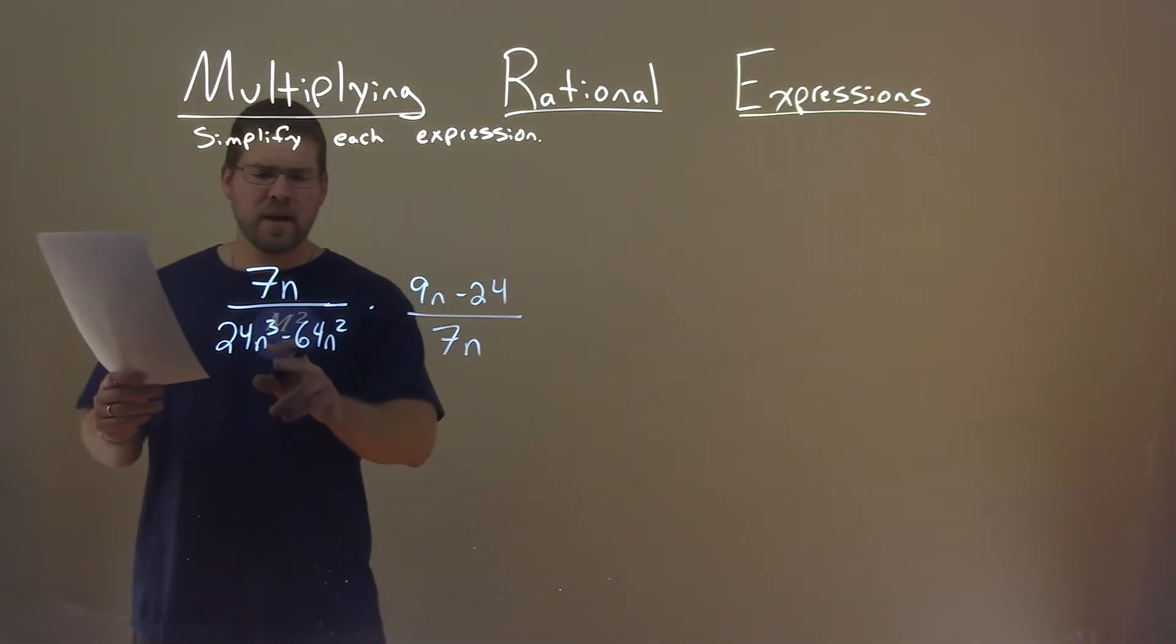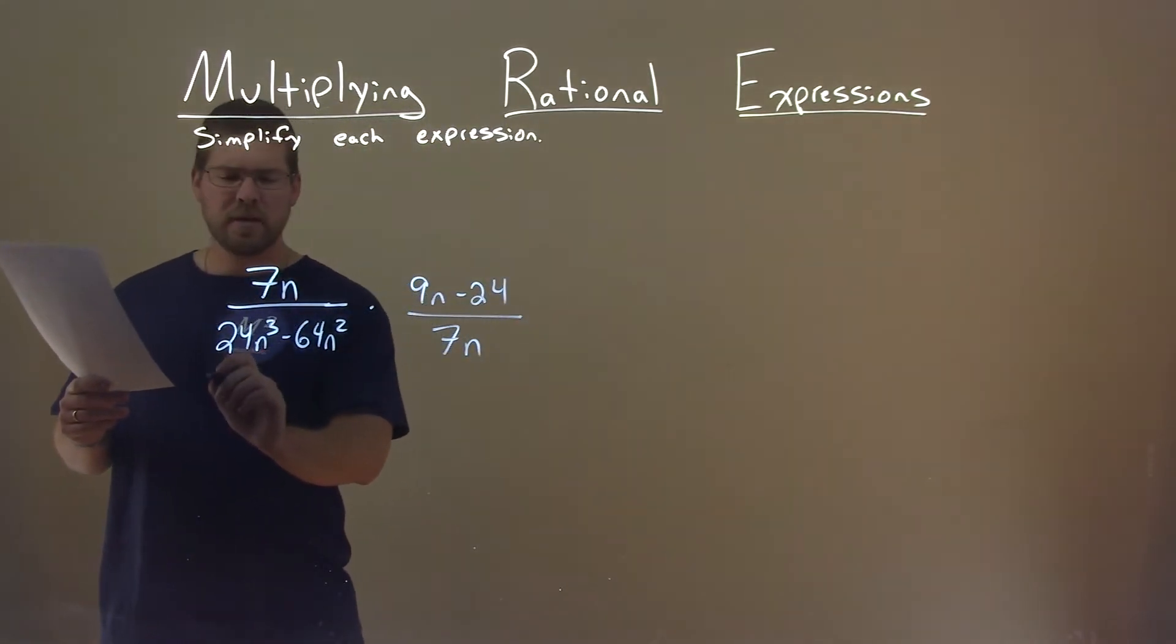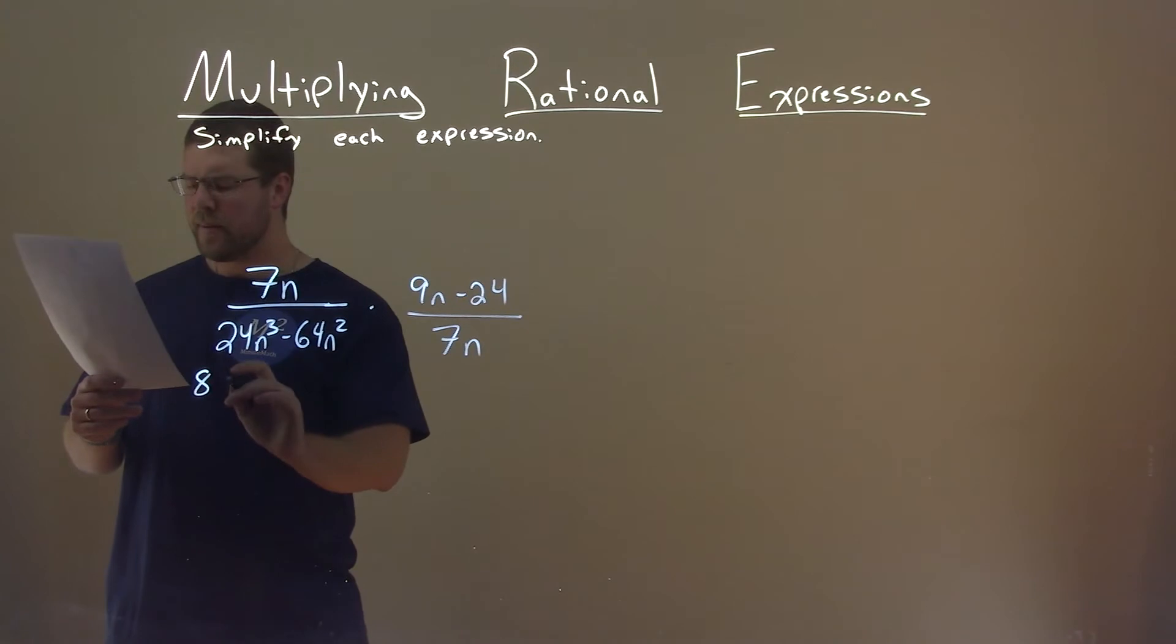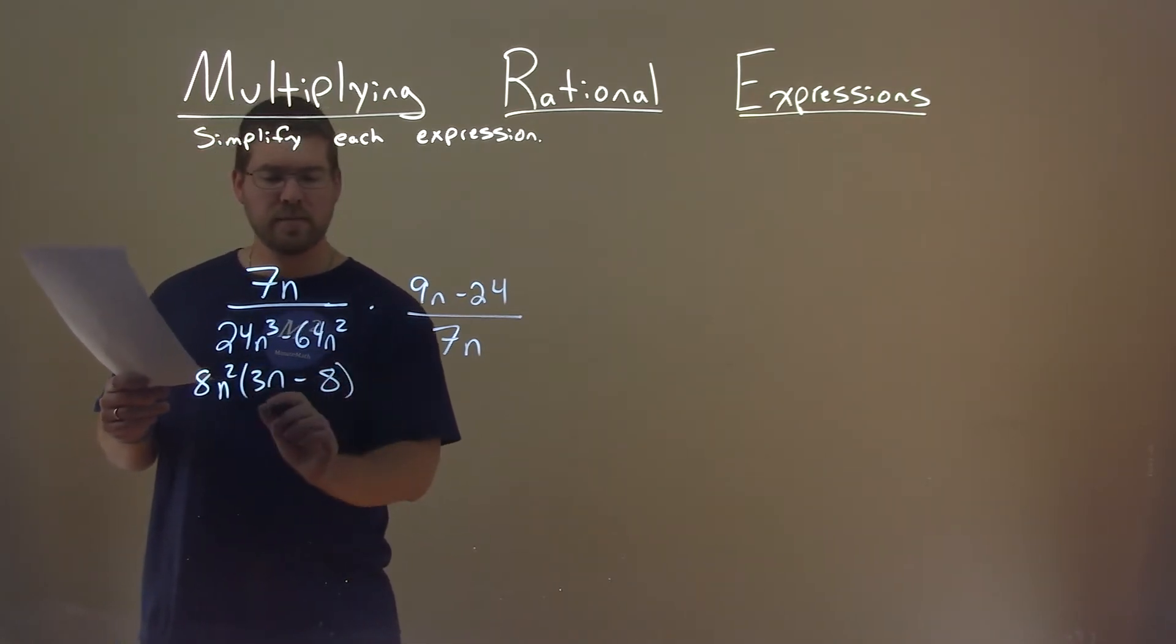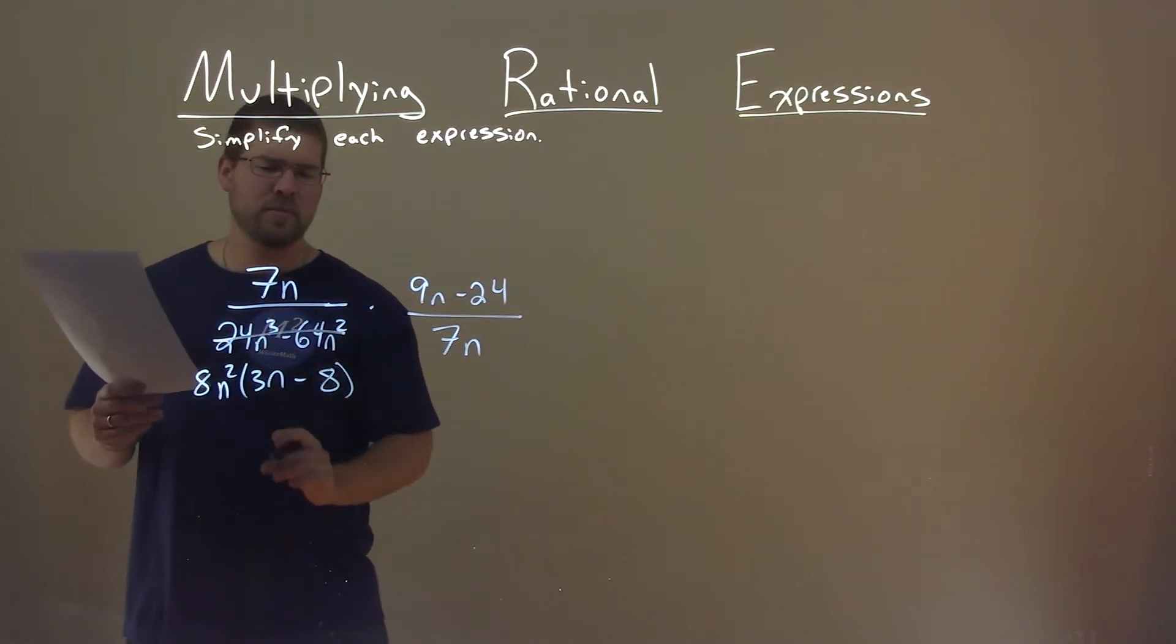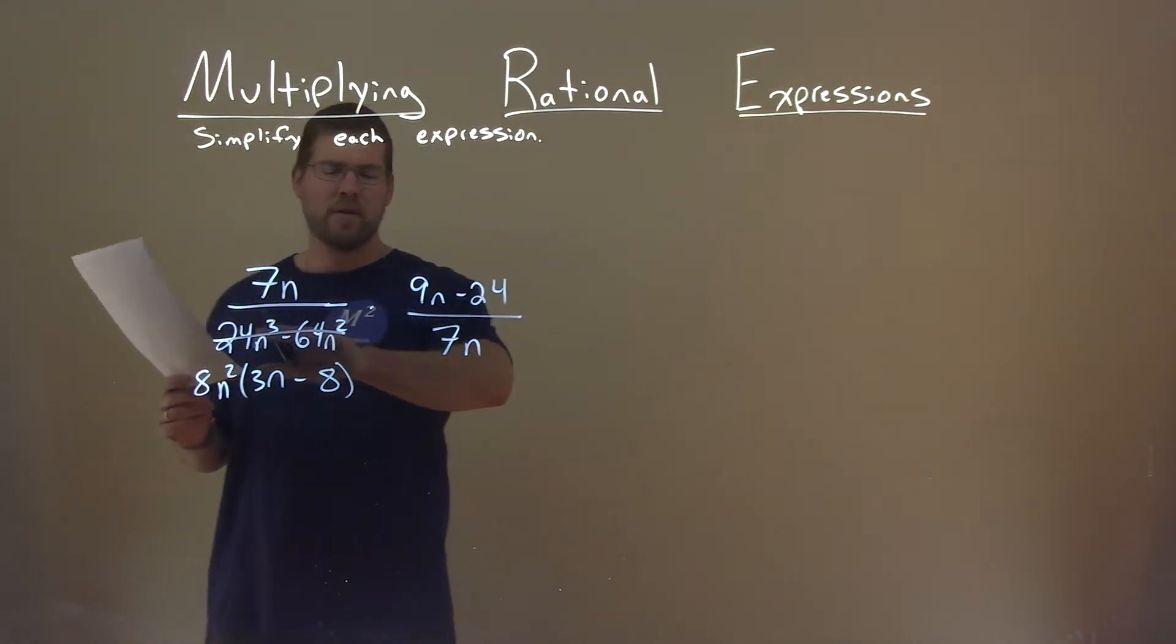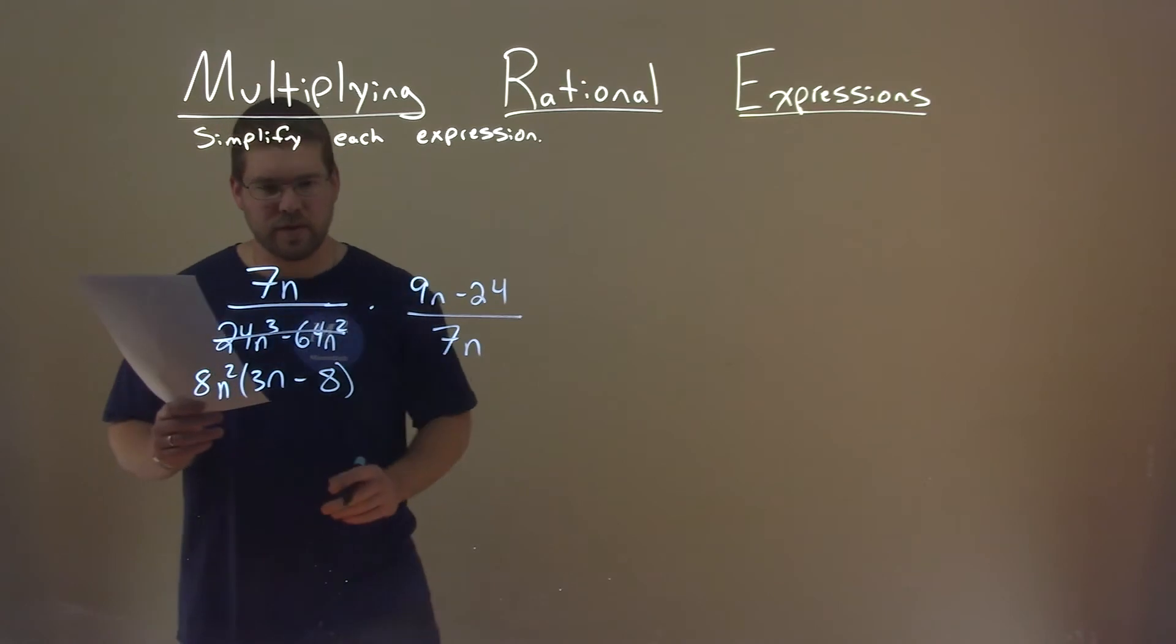Well, the denominator here, I can pull out an 8, and I can pull out an n squared. And so what am I left with? Well, that's a 3n minus 8. So I'm going to cross that out and put this in place of it.